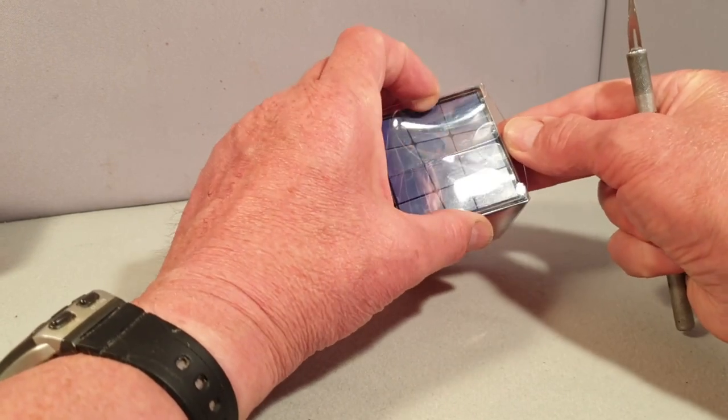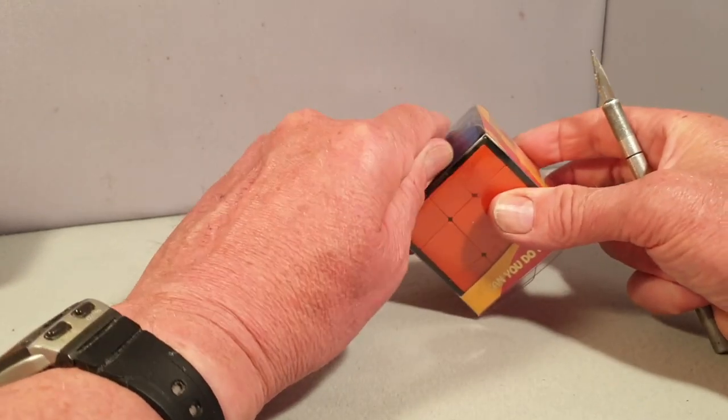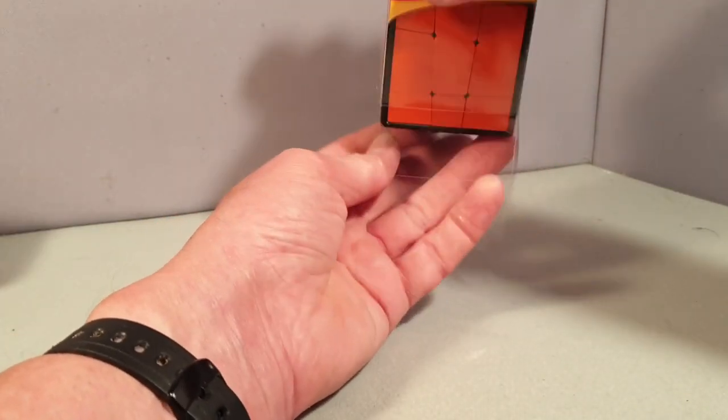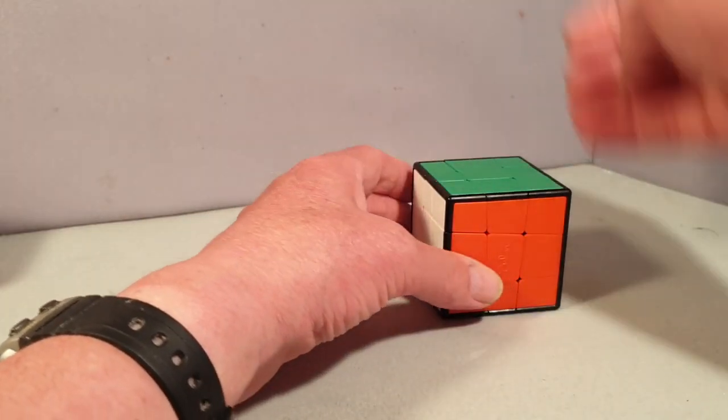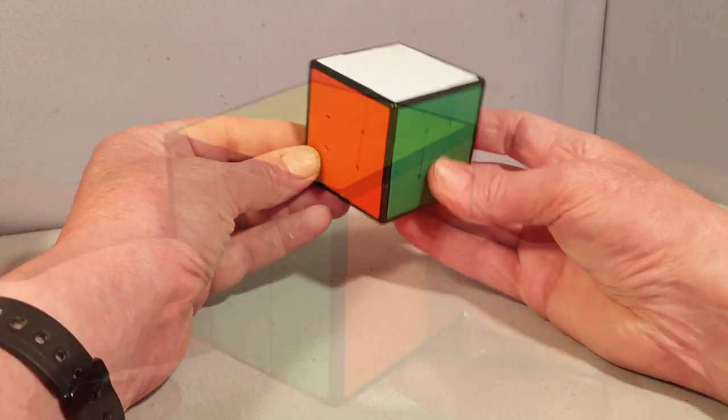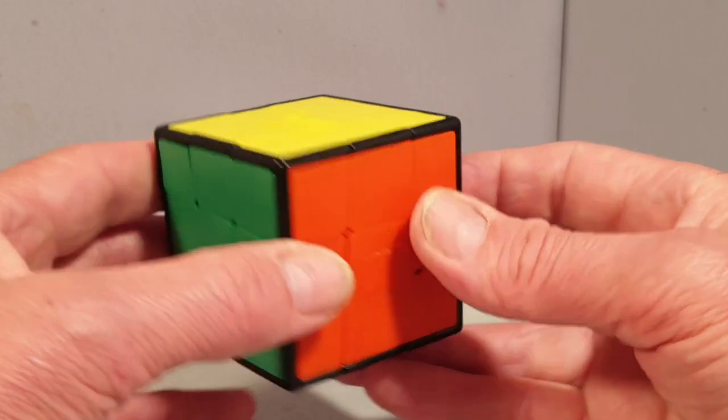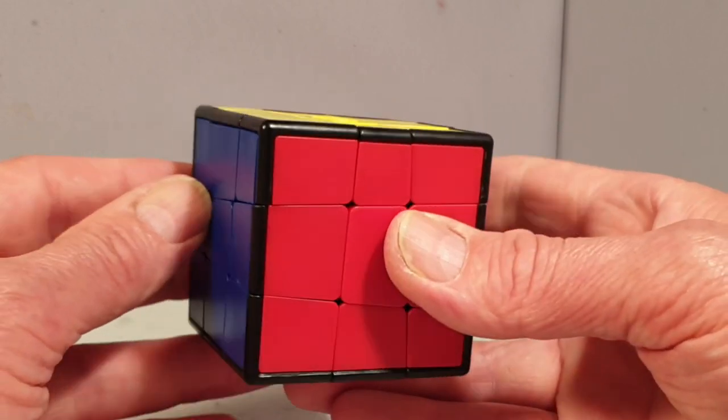On to the last puzzle and by far the best, designed by Oscar van de Venter and mass-produced by Calvin's puzzles. This is Oscar's sloppy cube. Now, luckily it's new because nobody wants sloppy seconds.